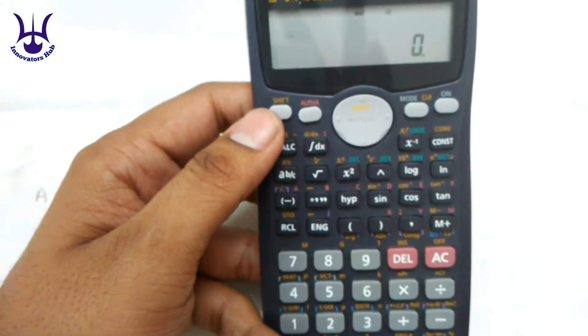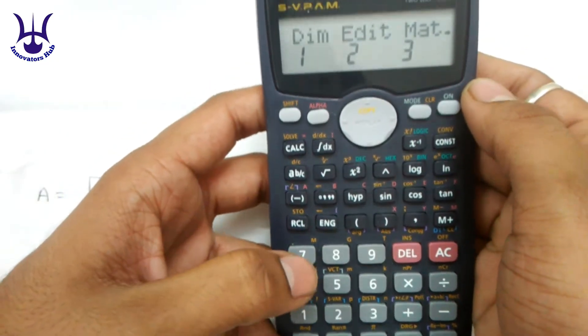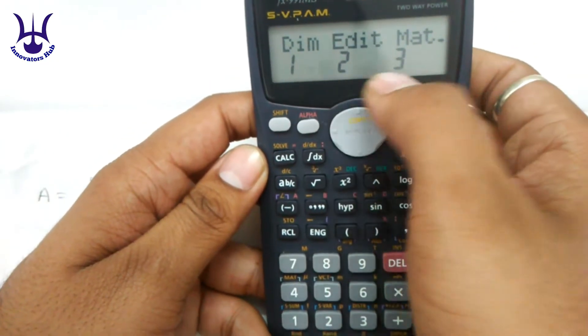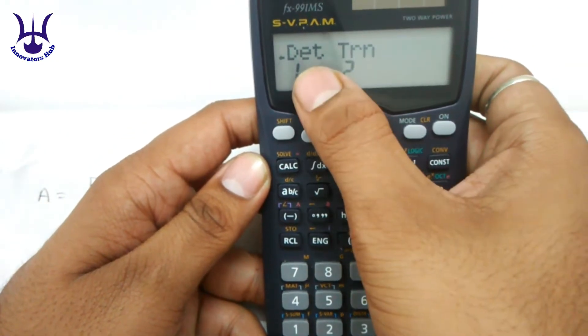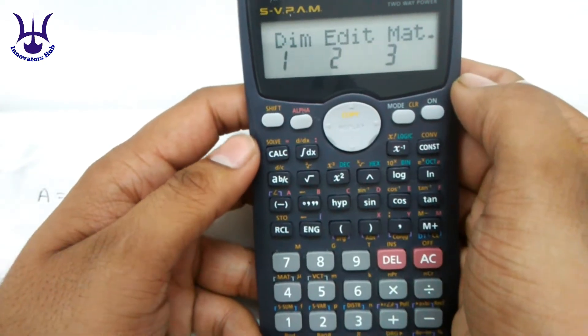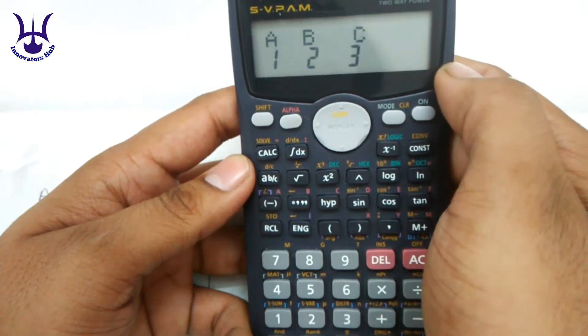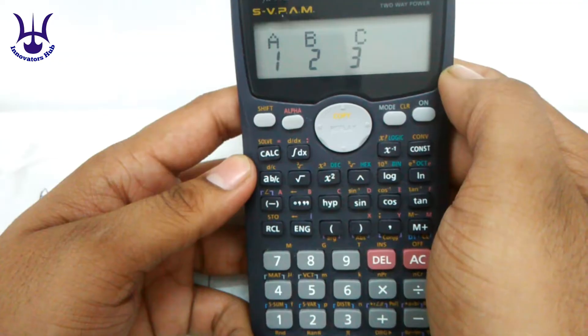Now we have to put the value of the matrix in the calculator. For that, select shift and 4. Now you'll get some options like dimension, added, matrix, determinant and transpose. So we have to select 1, that is the dimension, because we have to feed the value into the calculator of the matrix.